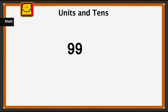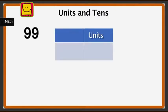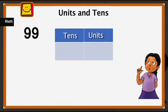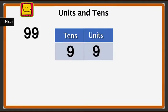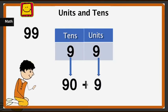Now what number is this? Let us break it up into units and tens. There are 9 tens and 9 units. What is 9 tens? That's right, it is 90. And this is 9 ones. 90 and 9 when added gives us 99. So in this way we have seen how we can break up numbers into tens and units. You can also try this with different numbers. Bye bye!